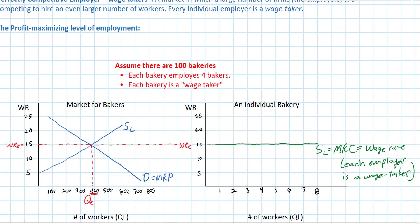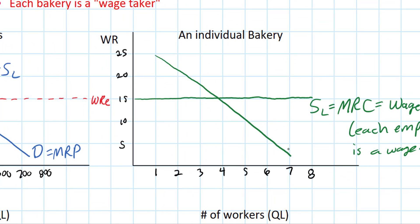Each employer takes the wage determined in the market. If the market demand or supply for labor changes, the equilibrium wage rate will change, but each individual employer faces a wage rate determined by market forces. Each individual firm's demand for labor, when aggregated, equals the market demand for labor. This individual bakery has a demand for labor represented by its marginal revenue product, which is downward sloping. The question now is how many workers should each bakery hire.